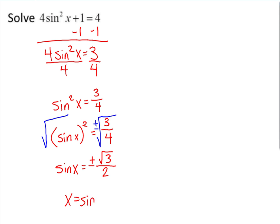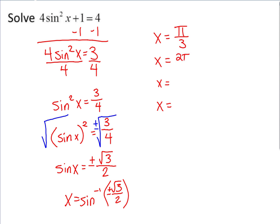To get x by itself, take the inverse of radical 3 over 2, which means looking at your unit circle. Remember, sine is your y-coordinate, so find all y-coordinates of positive or negative radical 3 over 2. There are four locations: pi over 3, 2π over 3, 4π over 3, and 5π over 3. Since this is all solutions and we can go around the circle multiple times, we add plus 2nπ to each answer.